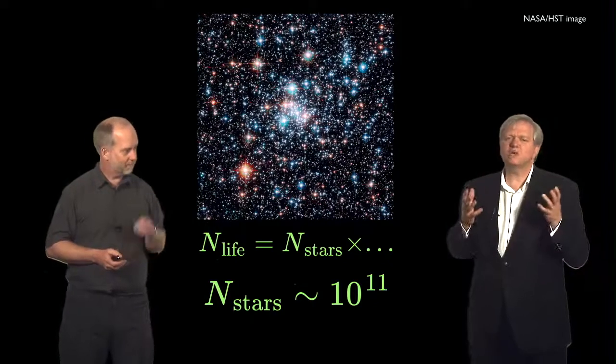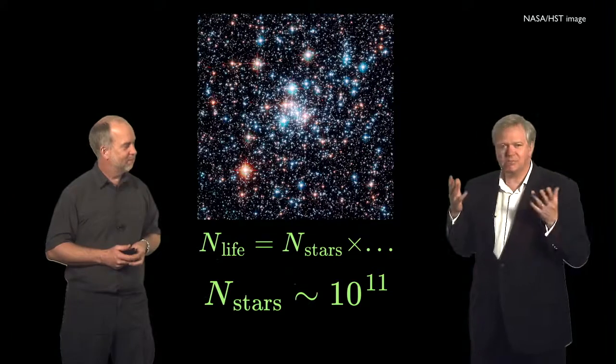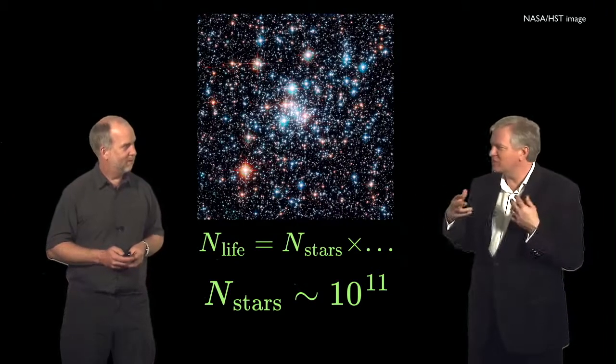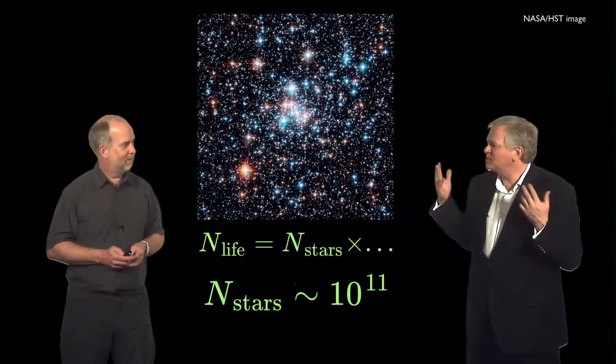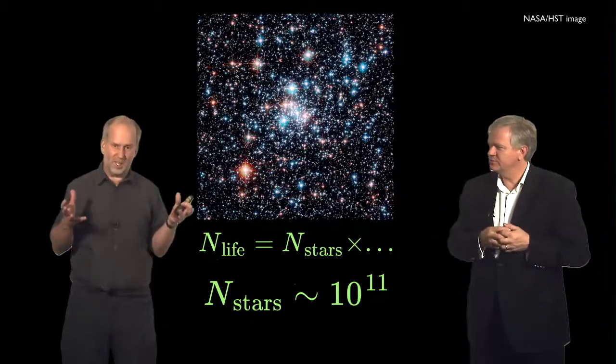All right, so 10 to the 23 stars. With that many possibilities for there to be Earths, there must almost be something that looks just like Earth. How could we possibly think that we are it, given that many chances?